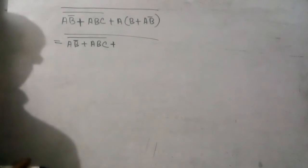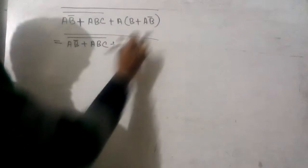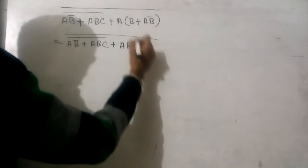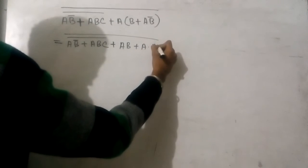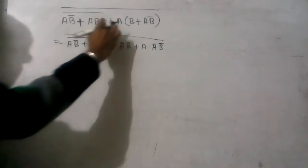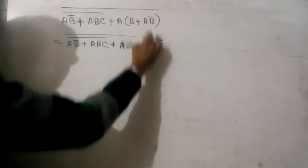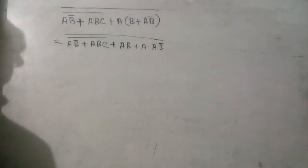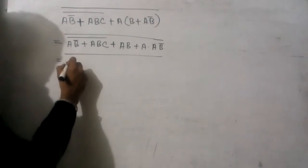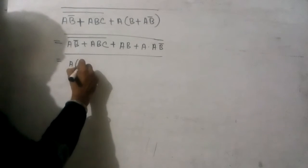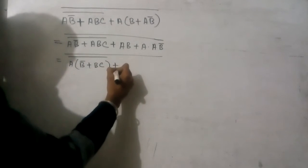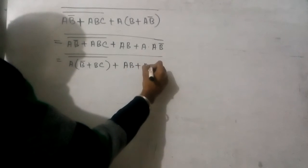First I want to apply the distribution property here: A·B plus A into A·B̄. So A into A·B̄ combined. Now as you told, we can take A common, so there will be B̄ plus B·C plus A, and B plus A·B̄.